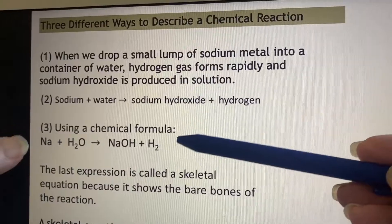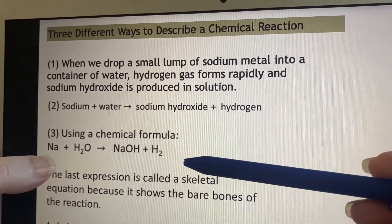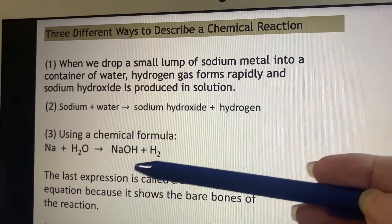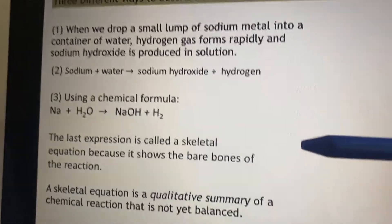We can even go as far as to give formulas for all of those things. So we'll use the symbols and say sodium plus H2O becomes sodium hydroxide and the diatomic hydrogen gas.